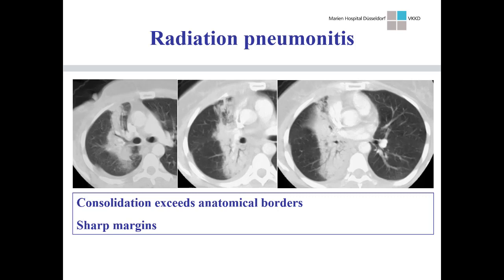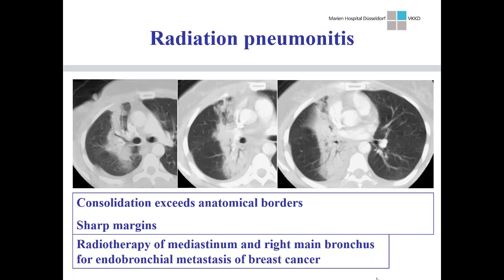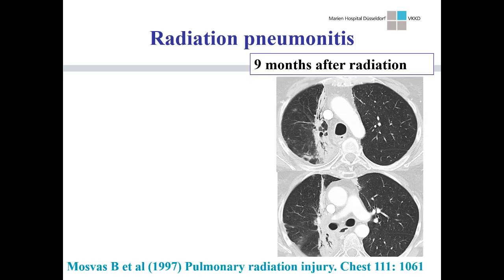We asked ourselves why this lady, with radiation of the chest wall for breast cancer, developed pneumonitis like that, because the radiation port didn't fit. Going back for more information, we found the radiation had actually been done for a metastasis in the bronchial system, not the chest wall — and then it fits. This is an older case treated with AP-PA fields, and the sharp border here reflects the border of the radiation port. So the key feature is a consolidation exceeding anatomical borders but with sharp margins reflecting the radiation port.